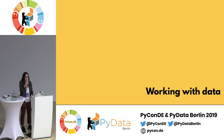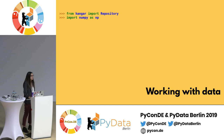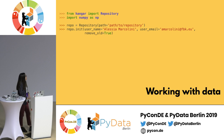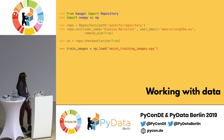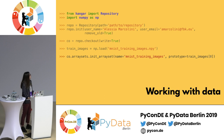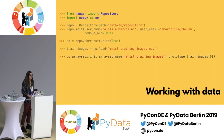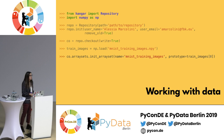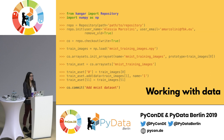Let's see how it works. You import the Hangar repository, instantiate it given the path, and initialize it with your name and email. You check out into this repository keeping the write lock. You load your images using NumPy, then initialize a new array set providing the name and a prototype — an element of your collection so Hangar can know the shape and type of elements and decide the best backend for storing your data. You then add elements to the array set, commit your changes, and close the write lock.